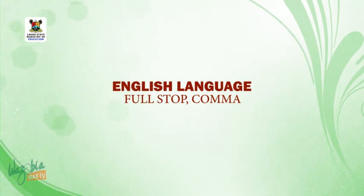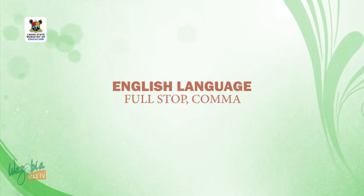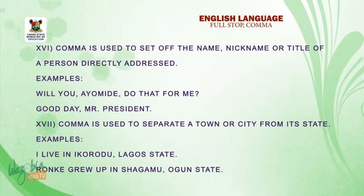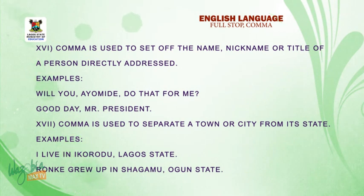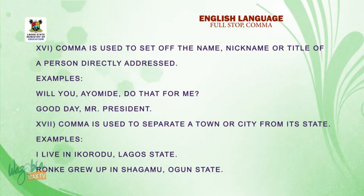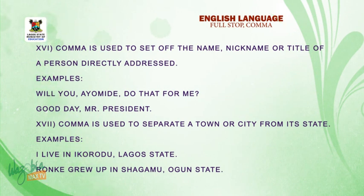Welcome back to the final session of this class. Number sixteen: comma is used to set off the name, nickname, or title of a person directly addressed. For example, Will you, Iam, will you do that for me? Good day, Mr. President.